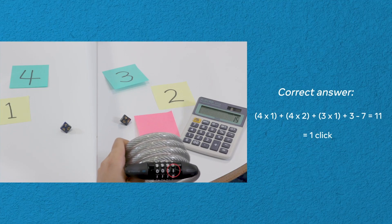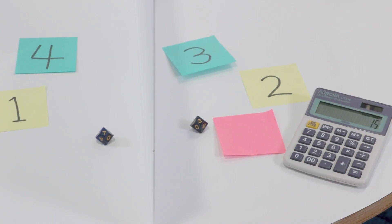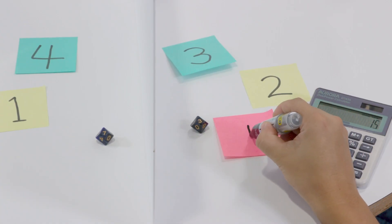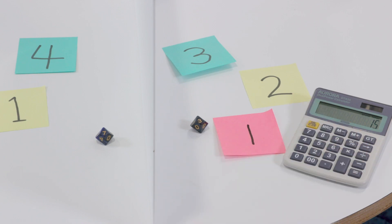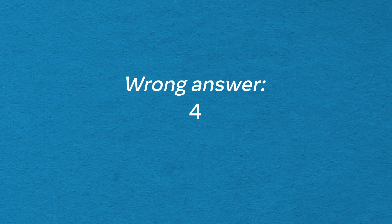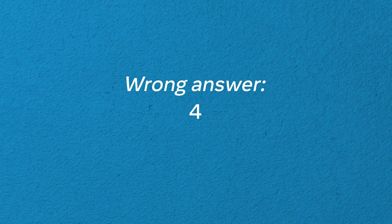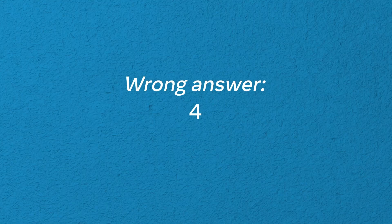How about the multiplication protocol? This one is actually the most interesting. At the very end of that protocol, when it's time to write their answer on a sticky note and place it on the table to the right, the imposter could write down the wrong number. Once again, writing down the wrong number doesn't help the imposter violate anyone's privacy, because they don't learn anything new by doing so.